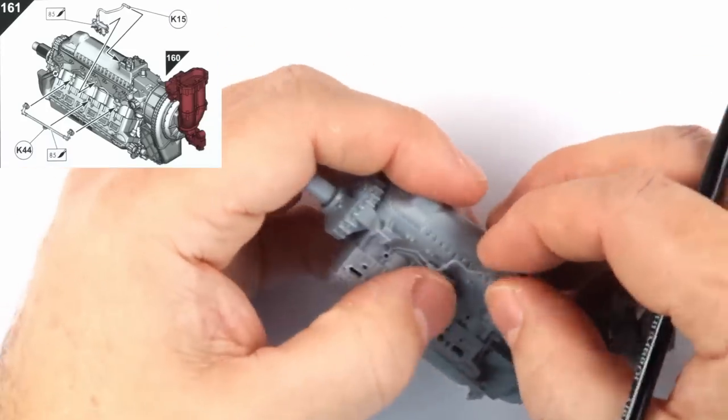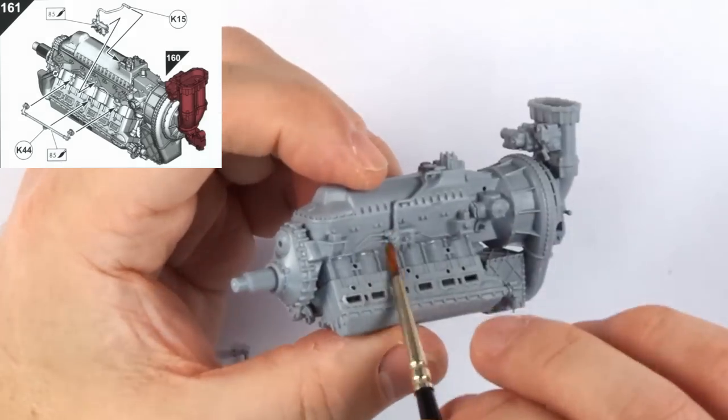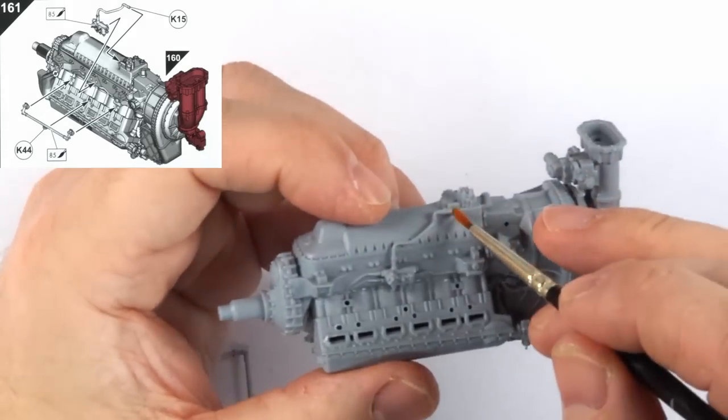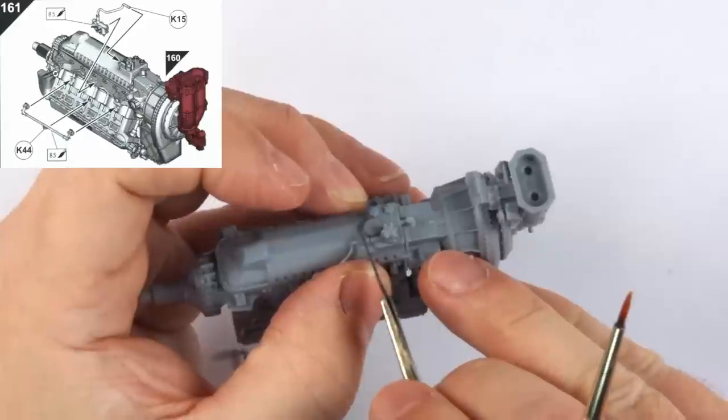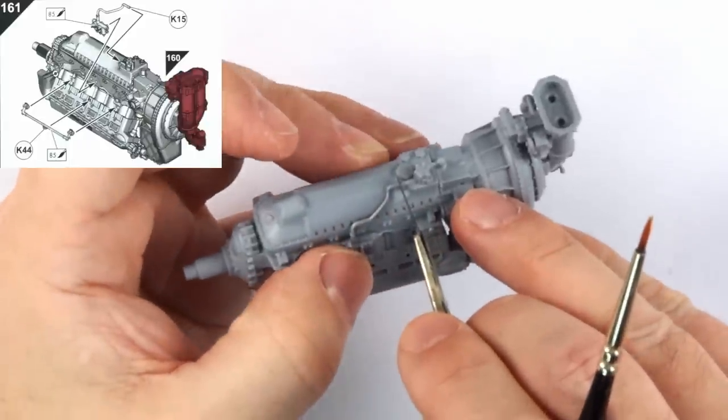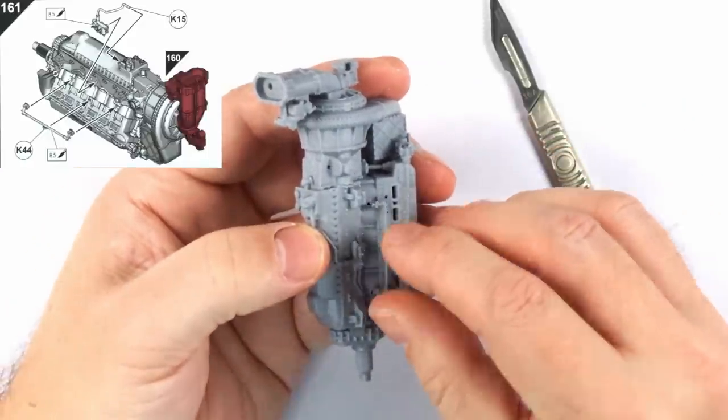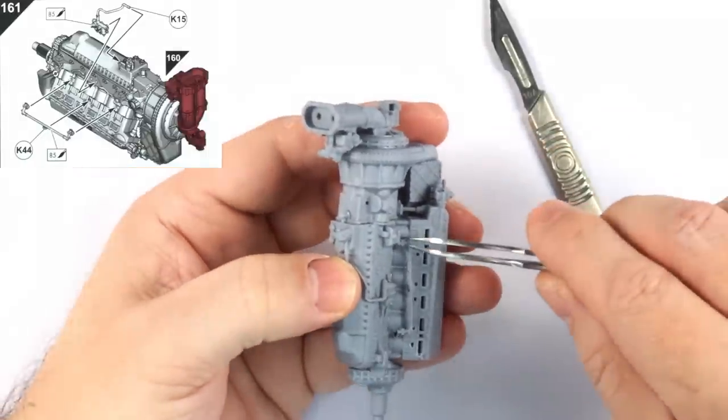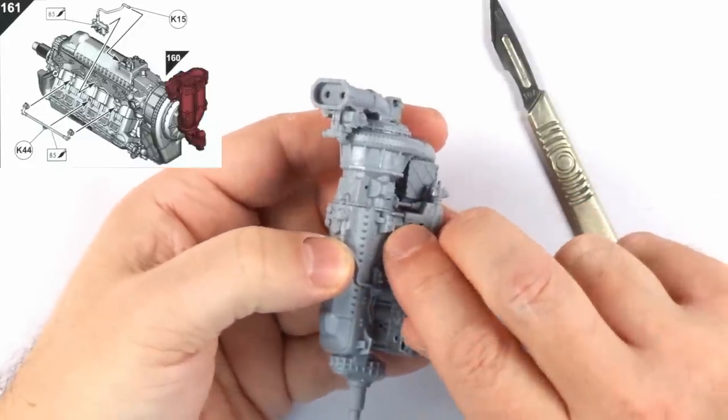Step 161 moves us into the more fiddly items on the engine, with this one connection on the oil filters being one of the ones I spent most time on. Piece K15 attaches to the engine with no issues, but the line to the oil filters needs holding in place for some time before it will stay in place. The other parts in 161 to 163 offer no real issues other than being a little bit fiddly at times, but nothing a pair of tweezers and some patience can't solve.